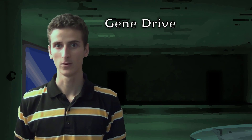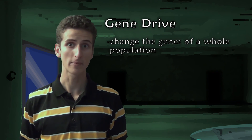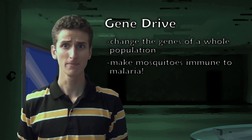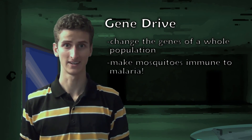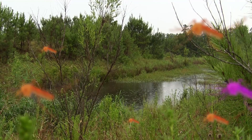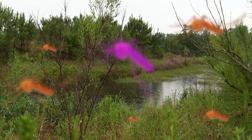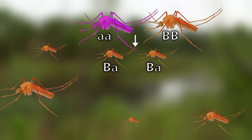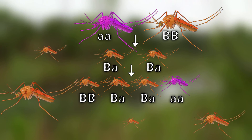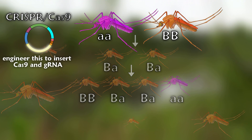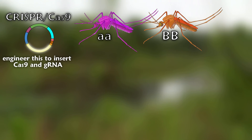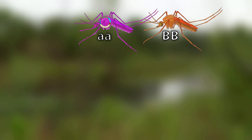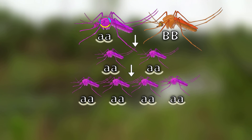There's also something else you can do with CRISPR: create a gene drive, which can change the genes of a whole population, like making mosquitoes immune to malaria. If you release a mosquito that's resistant to malaria into the wild, all of its offspring will have one copy of the new gene, but it will quickly get diluted. But if you engineer a mosquito to transfer genes that code for Cas9 and gRNA to its offspring, CRISPR will continue working in each generation, ensuring all offspring are modified forever. Kind of scary.